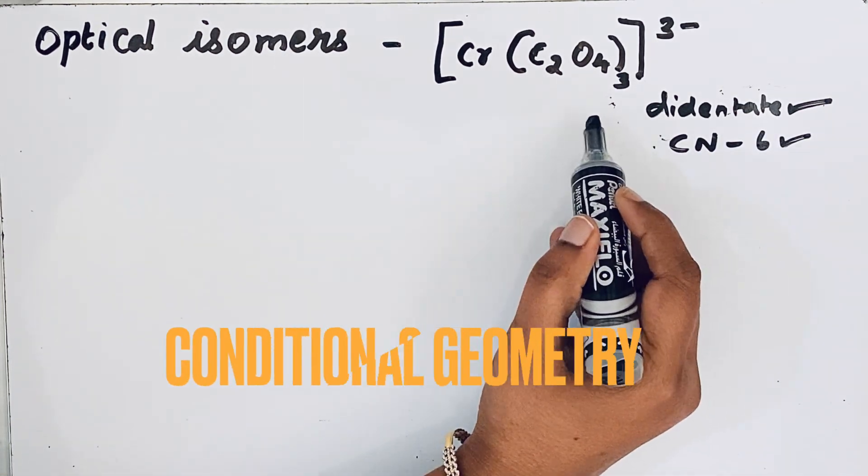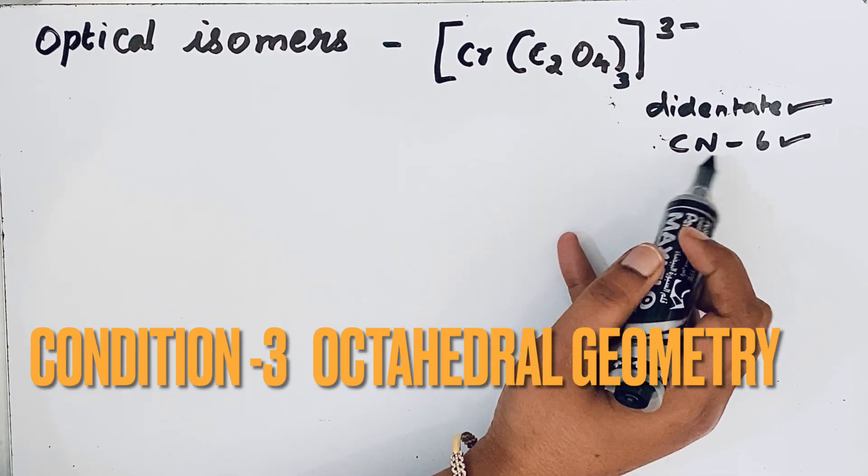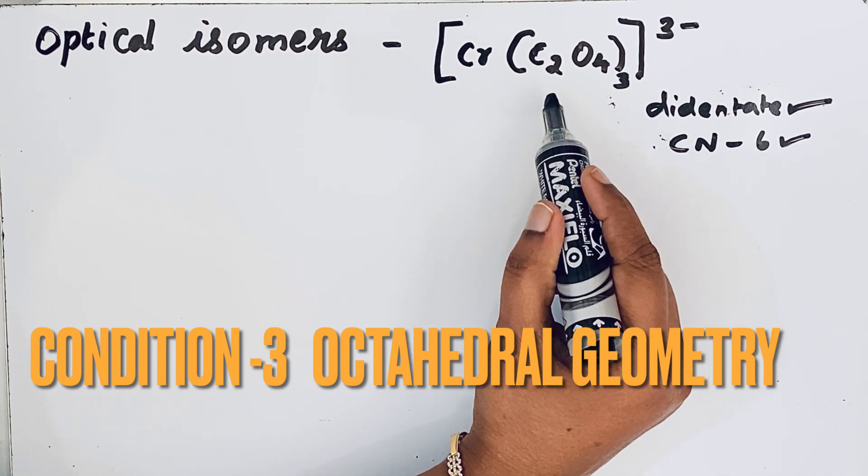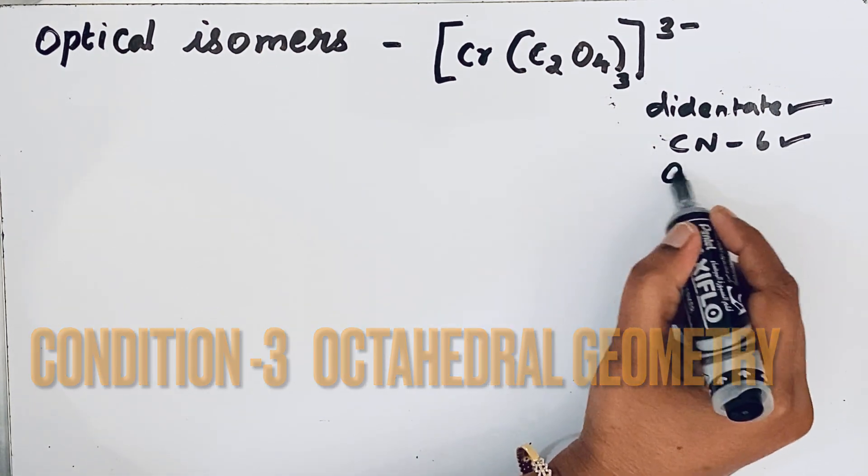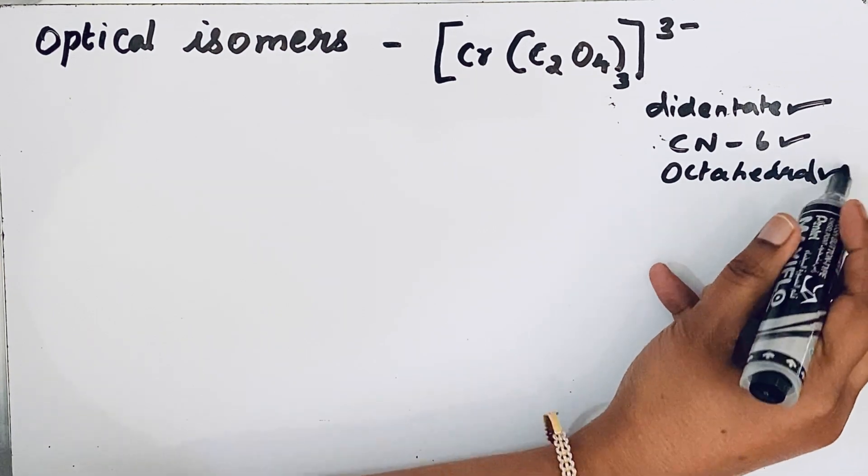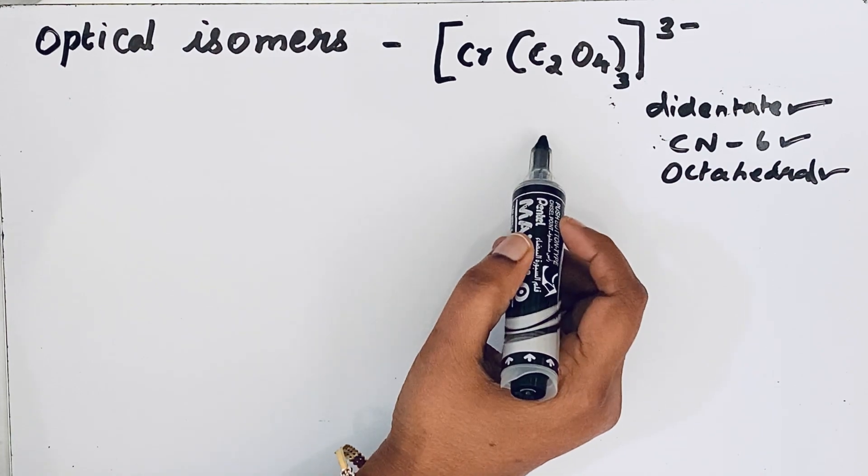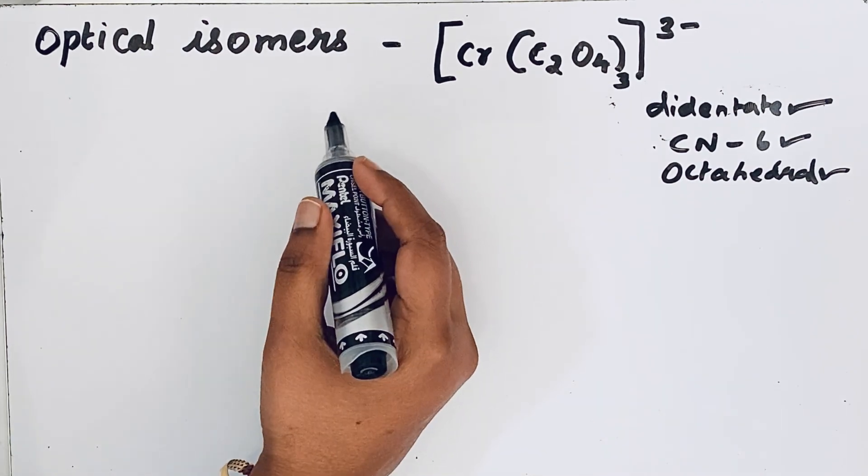Then the third condition is octahedral geometry. So due to this coordination number of 6, the geometry of the complex is octahedral. So this complex can possess optical isomerism. So now we go to draw that optical isomer.